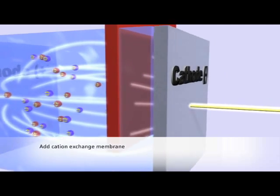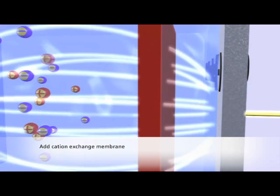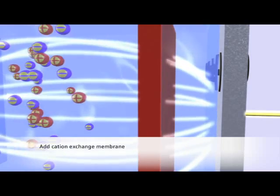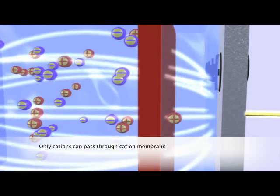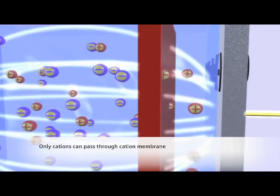When we insert an ion-exchange membrane made of cation-selective resins, it will block the flow of anions and water molecules. Only cations will be able to pass through to the other side.